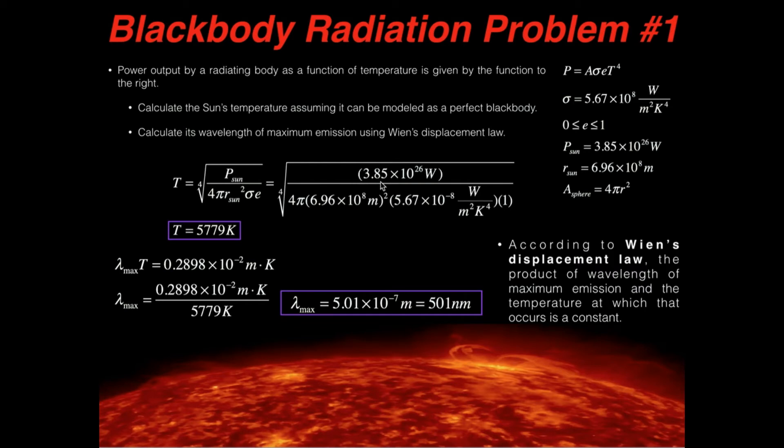So now I'm going to plug numbers in. The power output is 3.85 times 10 to the 26 watts, divide by 4 pi, divide by the square of the radius of the Sun, 6.96 times 10 to the eighth meters, square that, then divide by sigma, this constant, 5.67 times 10 to the minus eighth watts per square meter per Kelvin to the fourth, then divide by E, but we're assuming that's a perfect black body, so it doesn't really do anything, divide by one. Take that quotient, and when you take the fourth root of that, you get that the temperature is approximately 5,779 Kelvin.